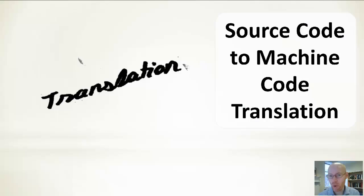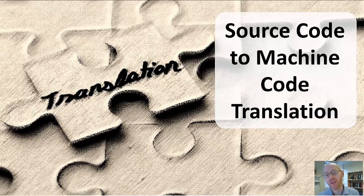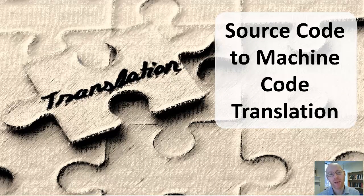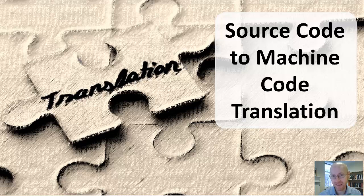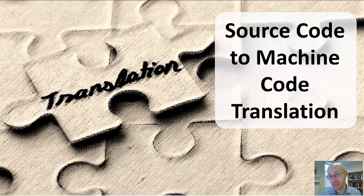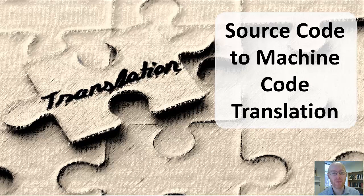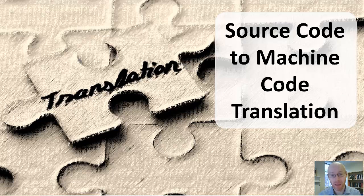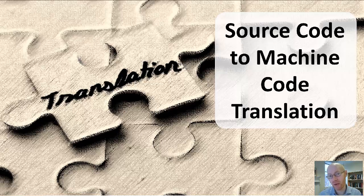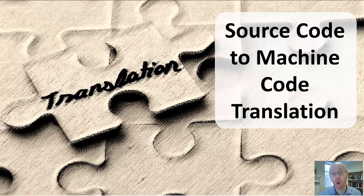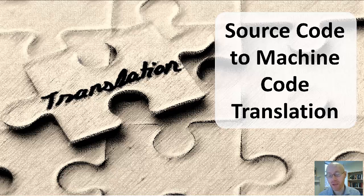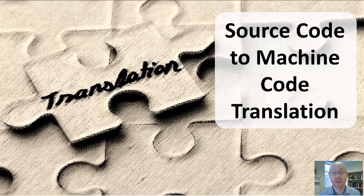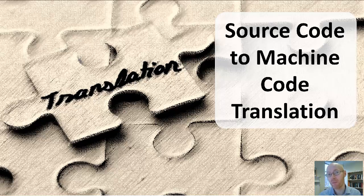More broadly, this is a process known as translation, where we are translating from a textual format, the code that we write, into a series of machine instructions that correspond to whatever we have written. C++ uses a process of compilation, but we want to view that within a broad context of different approaches that we can use for translating from source code into machine instructions.